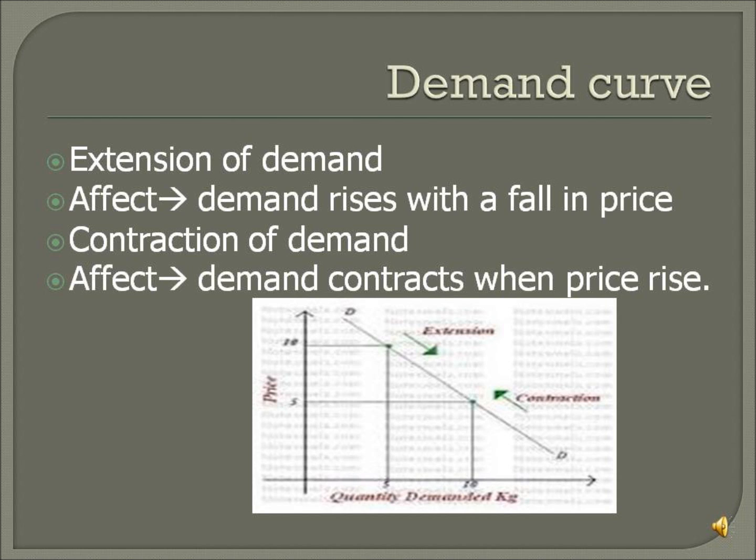Demand curve. Extension of demand — it affects demand, which rises with a fallen price. Contraction of demand — it affects demand, which contracts when prices rise. These changes happen with changing price and with no change in any other factor that can affect demand.